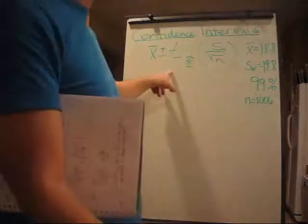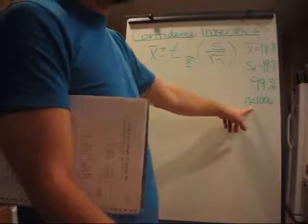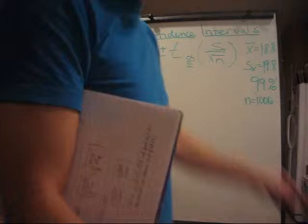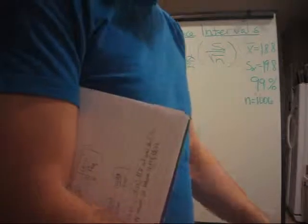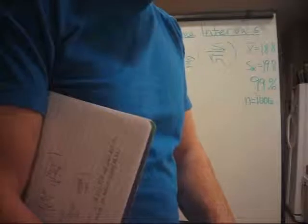So with the t-tables, we're going to go degrees of freedom, n minus 1. Now we don't have 1,006 on our t-tables, but we do have 1,000, so we'll use that.